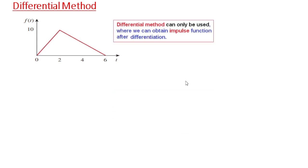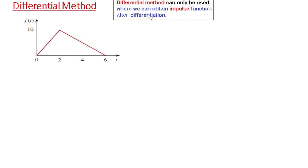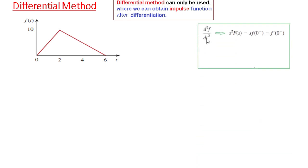For the differential method, the key point is that it can only be used where we can obtain an impulse function after differentiation. We will use the differential formula which states that d²f/dt² in the Laplace domain equals s²F(s) minus initial condition terms. Since there is nothing before or after 0, initial conditions are 0, so our equation simplifies to f''(t) corresponding to s²F(s), and from here we calculate the Laplace transform.